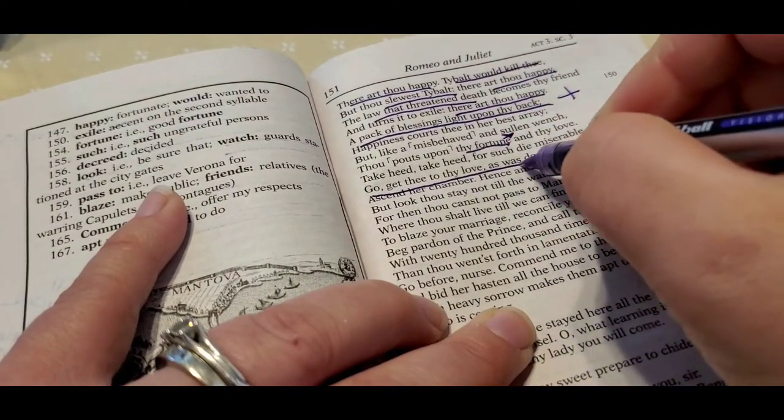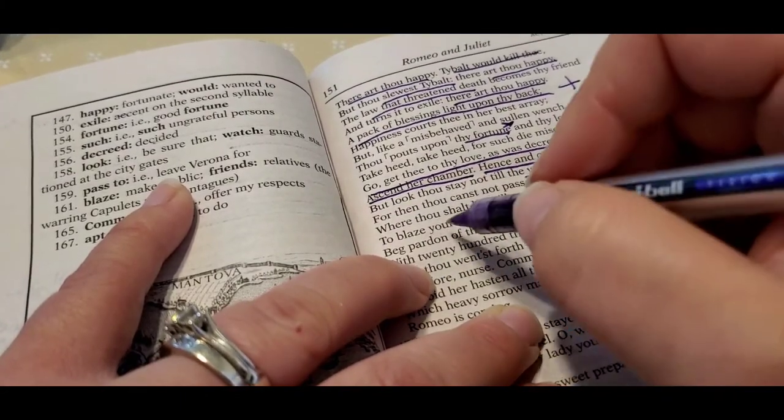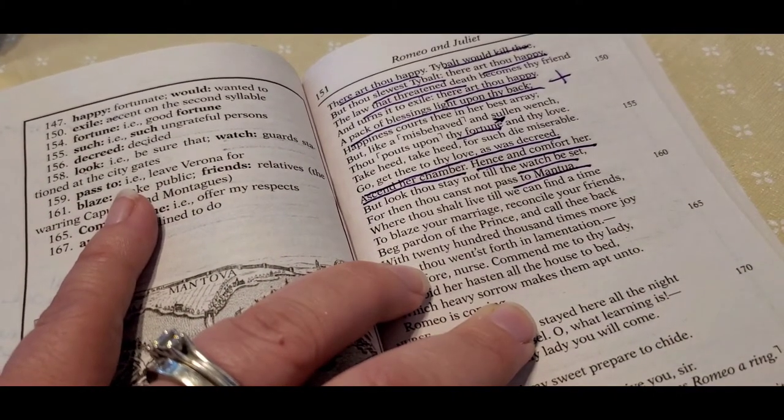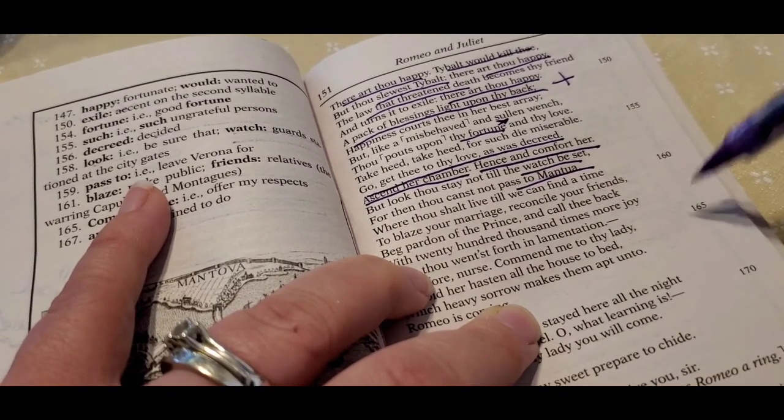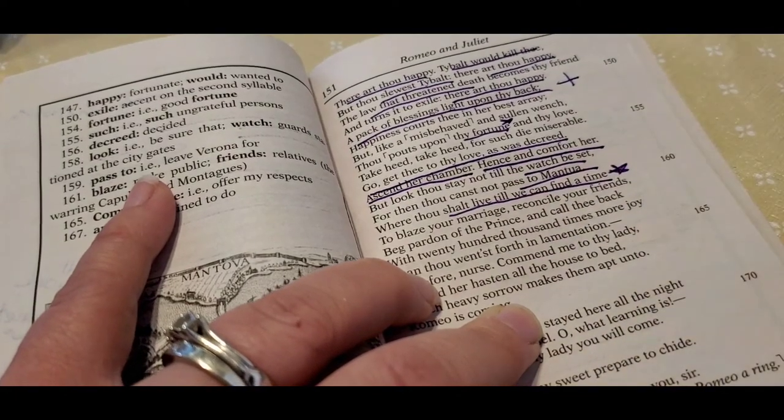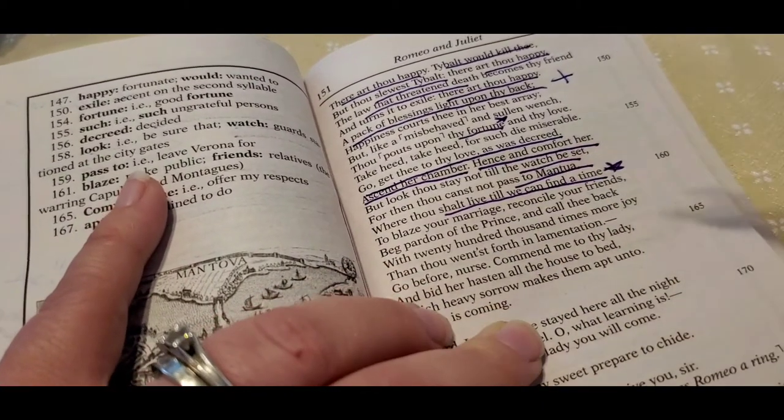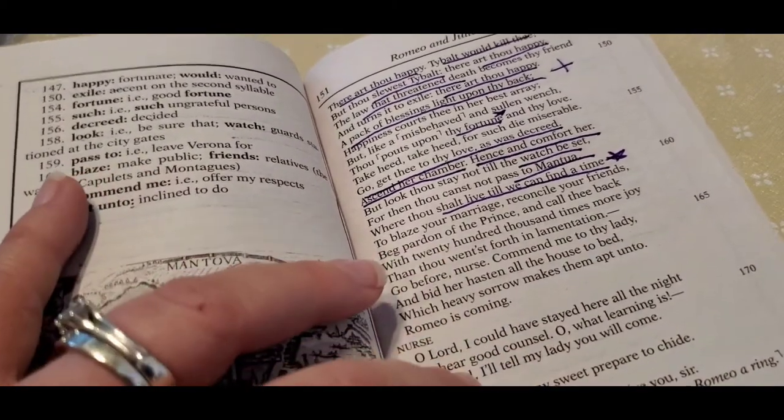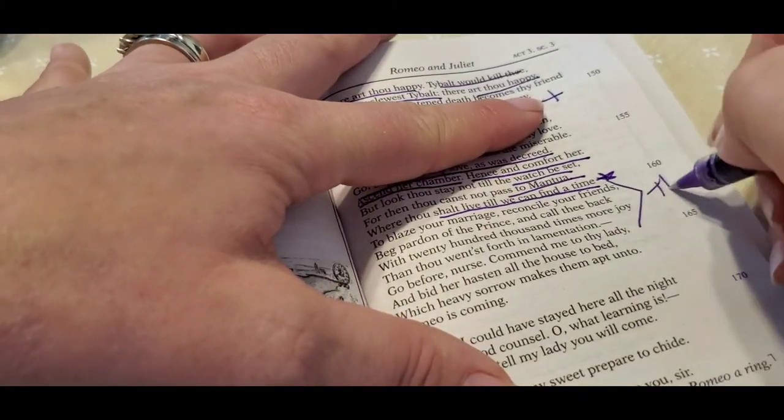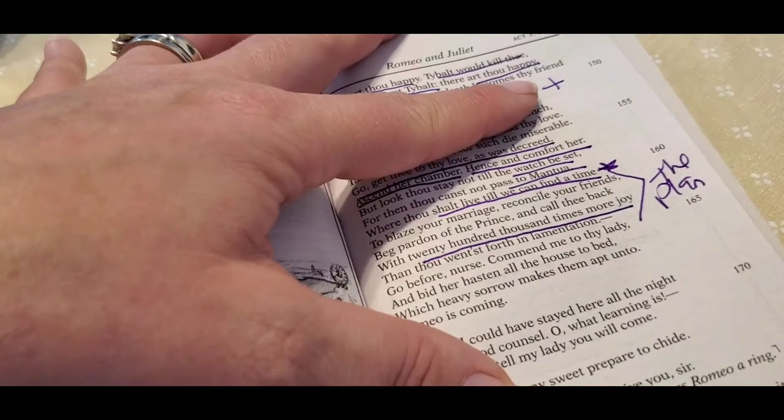He says, go get thee to thy love as was decreed, go to her chamber, hence and comfort her, but don't stay till the watch be set because you can't pass. You have to go to Mantua. You have to leave, but go tonight, have your wedding night, go in there, do everything that you're supposed to do as a husband, but then you need to leave in the morning and go to Mantua. And you will live there until we find a time. Now keep in mind that Romeo is extremely impatient, but he's got to be patient. When you find a time, you'll blaze your marriage, reconcile your friends, beg pardon of the prince and call thee back. We will. So this is the plan. And then you'll come back and everything will be better with 20,000 times more joy.